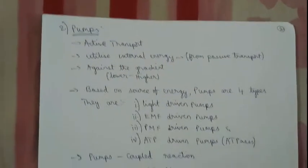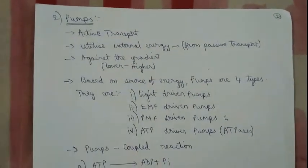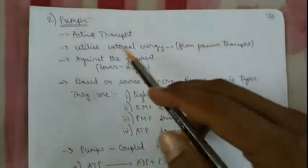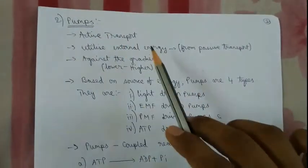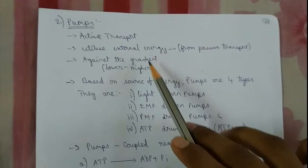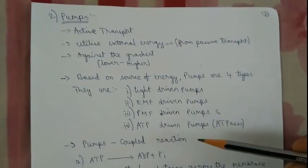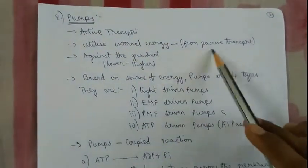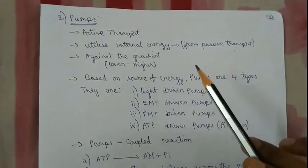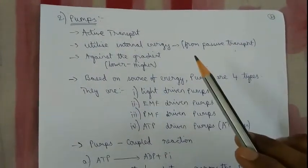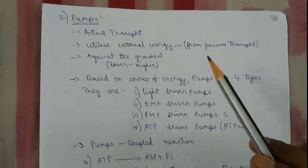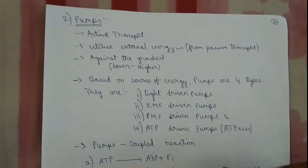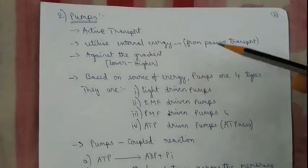Now let us discuss the second type of transport proteins: pumps. Pumps are instruments of active transport — they require ATP molecules for transportation, unlike channels which don't require ATP. Pumps utilize external energy for transportation. This external energy comes from passive transport: when ions or molecules pass from higher to lower concentration areas, a certain amount of energy is released.